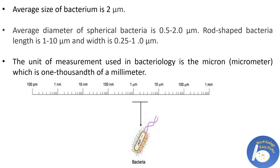The unit of measurement used in bacteriology is the micron, which is one thousandth of a millimeter. The size of a bacterium is almost 10 times bigger than a virus and 10 times smaller than a plant or animal cell.